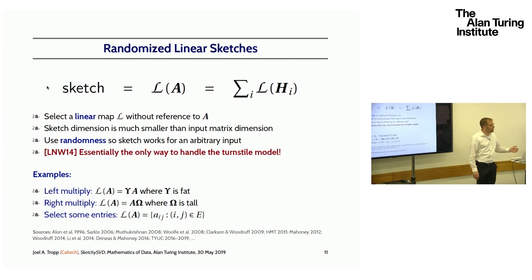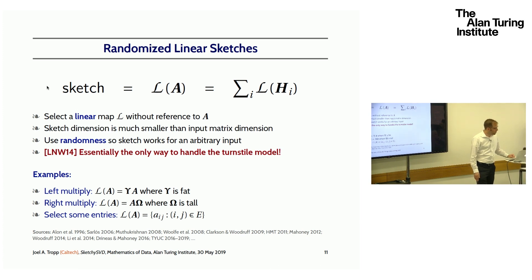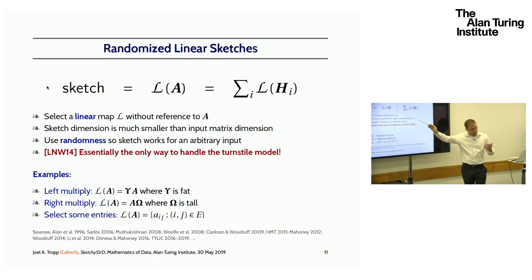How are we going to deal with this data model? We're going to be using randomized linear sketches. We heard a bit about this in Justin's talk. What we're going to do is select a linear map L from matrices to vectors that collects information about the matrix A. We're going to select the map L without any reference to the matrix A. The output dimension of this linear map, the amount of information we collect, is going to be a lot smaller than the dimension of the input matrix M times N. That means the linear map L has a huge null space. We're throwing away a lot of the matrix A. We're going to choose L at random so that A is unlikely to escape from our clutches.